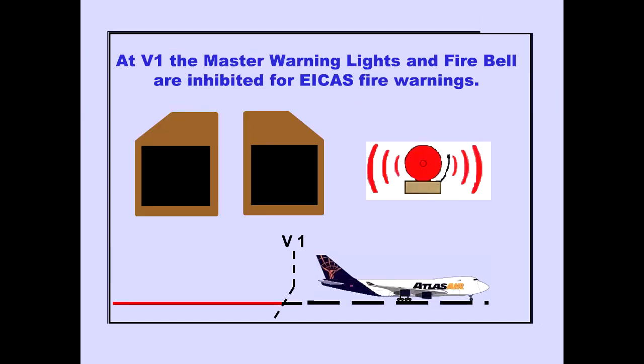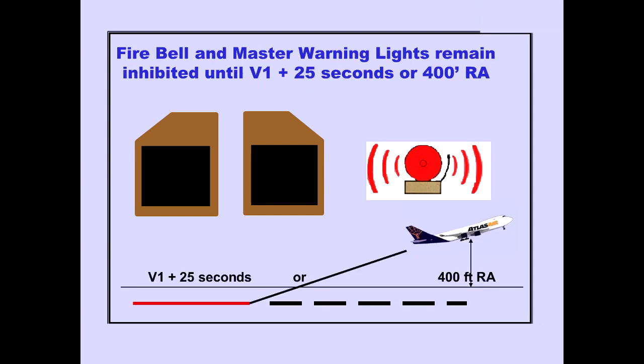At V1, the master warning lights and fire bell are inhibited for fire warnings to prevent distraction. If a fire condition occurs, the associated ICAST message is still displayed. The fire bell and the master warning lights remain inhibited until 25 seconds after V1 or 400 feet radio altitude.